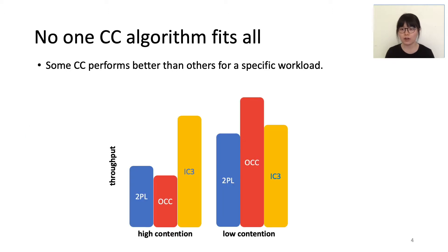Traditional concurrency control algorithms are fixed and oblivious to the actual workload. As a result, no single algorithm is the best — relative performances of different algorithms vary depending on the workload. This figure shows numbers from TPC-C. We can see that IC3 and 2PL are better than OCC under high contention, while OCC is the best when contention is low.